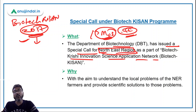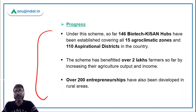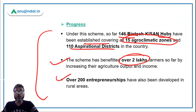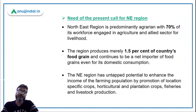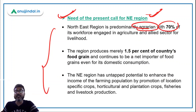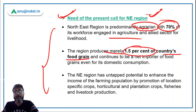Under Biotech KISAN, innovative solutions are provided in the agriculture sector. The special call for the northeastern region aims to understand local farmers' problems and provide scientific solutions. Progress made so far: 146 Biotech KISAN hubs have been established covering all 15 agro-climatic zones across 110 aspirational districts; the scheme has benefited over 2 lakh farmers; and over 200 entrepreneurs have been developed in rural areas.